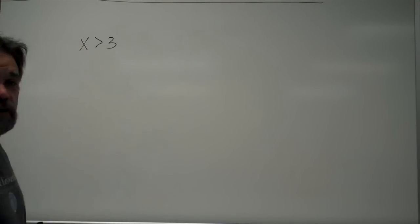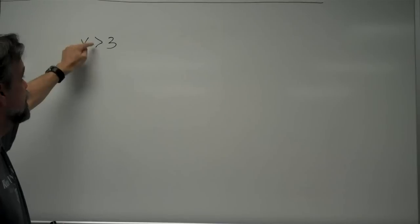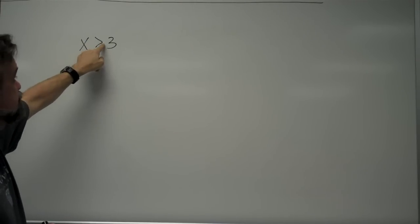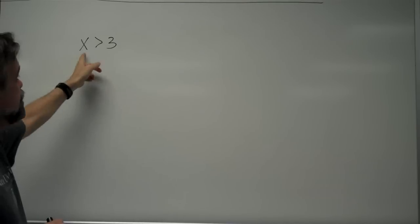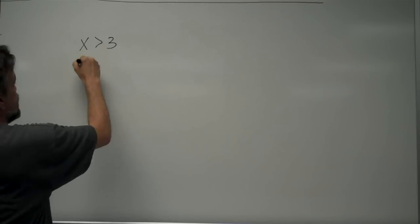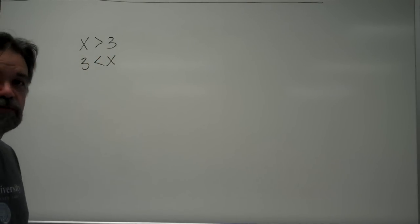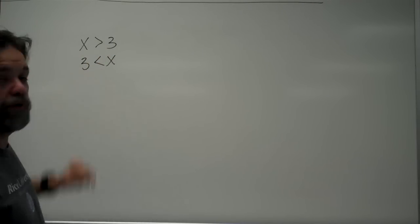x is greater than 3. Notice that the big side of this symbol is on the side that is greater than, the smaller side of the symbol is on the side that is less than. So x is greater than 3, which can also be written as 3 is less than x. It means the same thing.